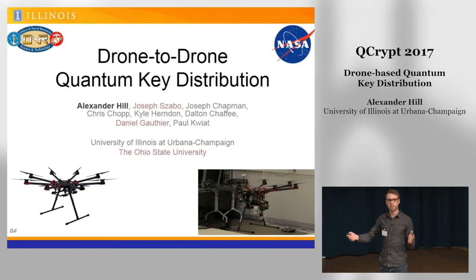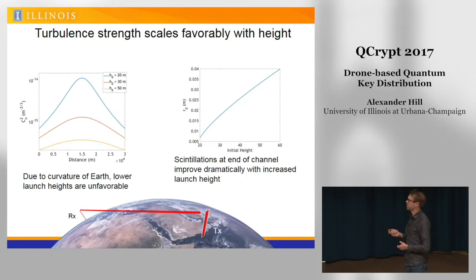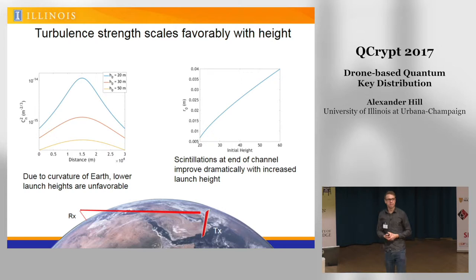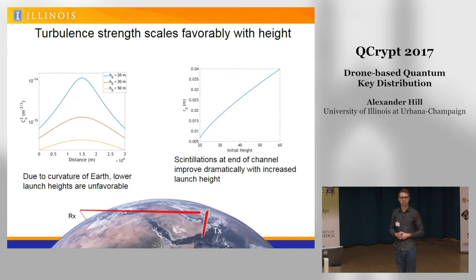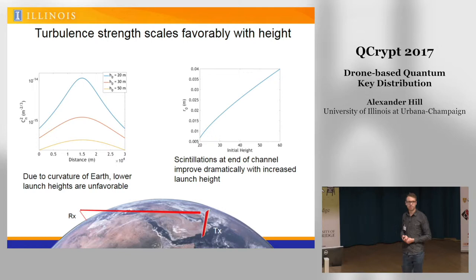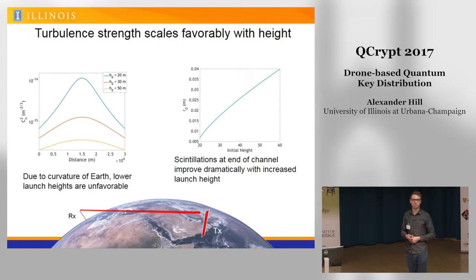What we are working on is trying to establish a secure QKD link by distributing single photons between drones flying in the air. One big issue if you're trying to do any sort of free space communication horizontally through the air along the Earth's surface is that turbulence scales much more poorly than if you're trying to do an up or down link, because the density of air remains roughly constant along the path. However, if you can raise your path even a little bit, you get an order of magnitude or two improvement in the turbulence that you experience.